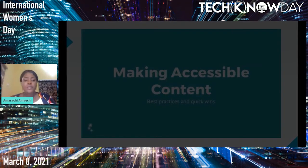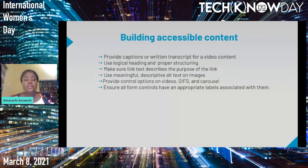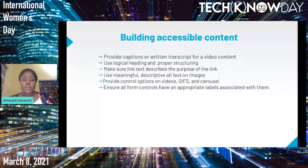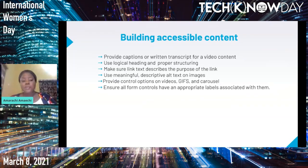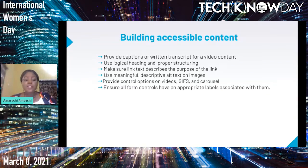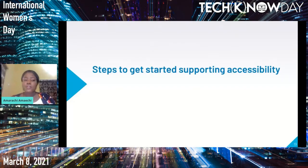Now let's look at making accessible content — best practices and quick wins. One: provide captions or written transcripts for video content. Two: use logical headings and proper structuring — for example, don't use an H1 heading in the footer. Three: make sure link text describes the purpose of the link. Four: use meaningful, descriptive alt text on images — don't just say 'a cat'; say 'the cat is sitting on the wall.' Five: provide controls on videos, GIFs, and carousels. Six: ensure all form controls have an appropriate label.